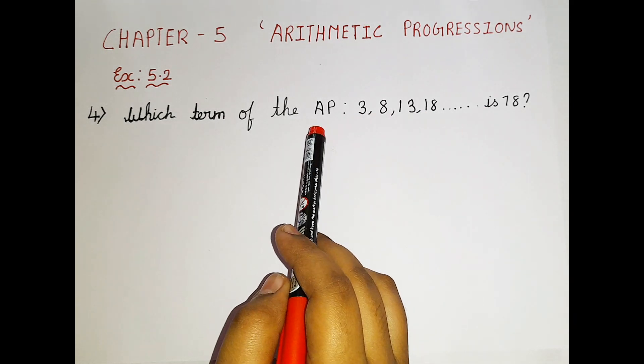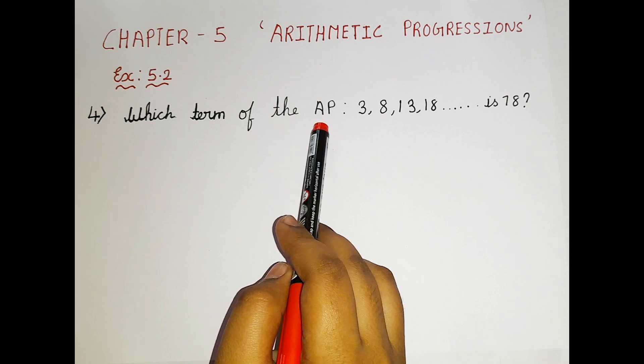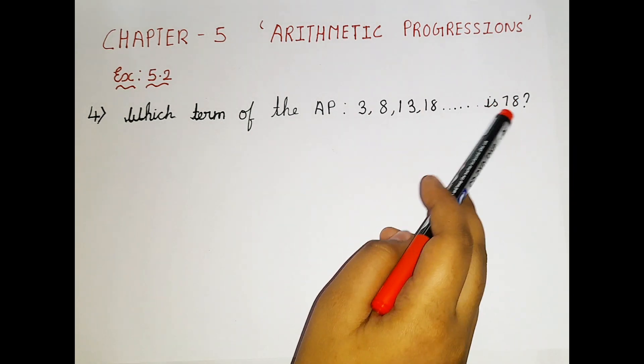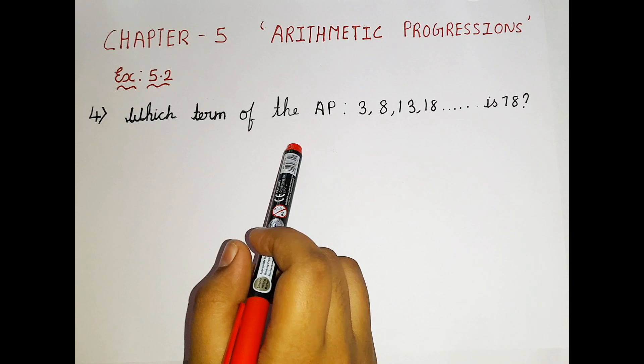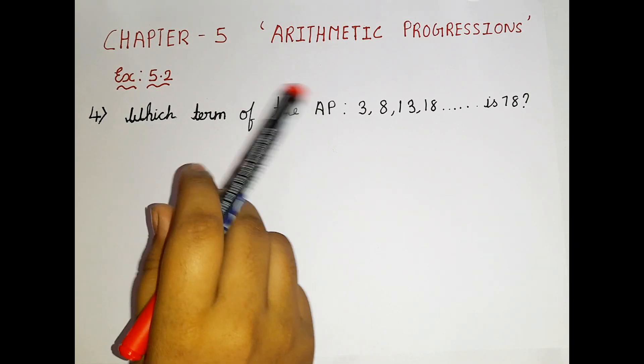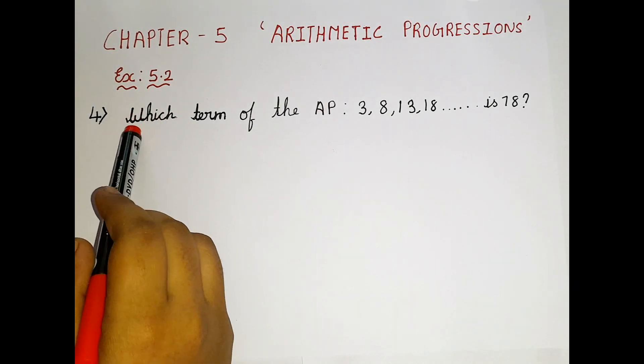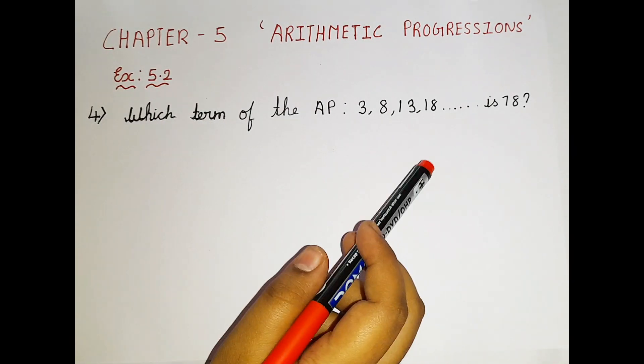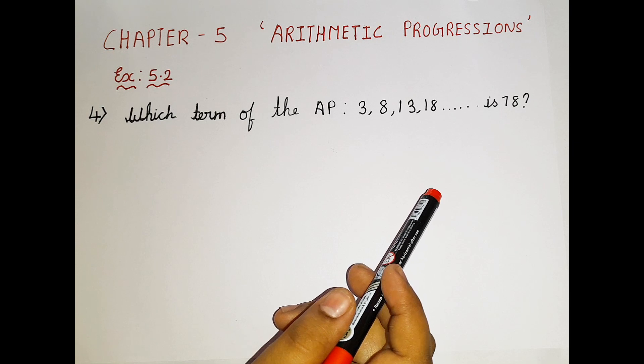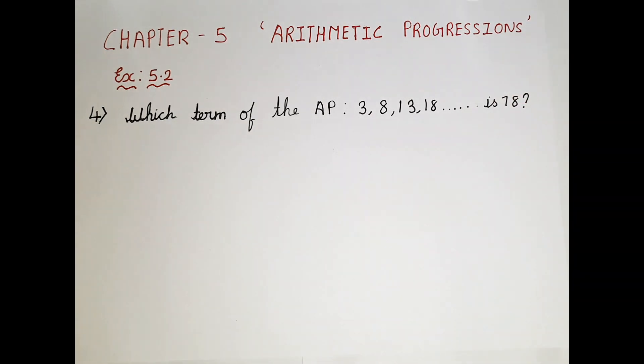Here, which term of the AP? AP means Arithmetic Progression is 78. I would like to share a clue, a trick. Don't just read from here. The actual question is which term is 78. We are supposed to find the term in which we will get 78. To find that, let us write the values.